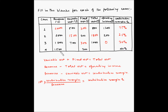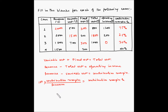For the fourth case, we have revenue of 1500. We don't have variable cost, we have fixed cost, we don't have total cost or operating income, but we have the contribution margin percentage of 40 percent. Contribution margin percentage equals contribution margin divided by revenue, multiplied by 100.